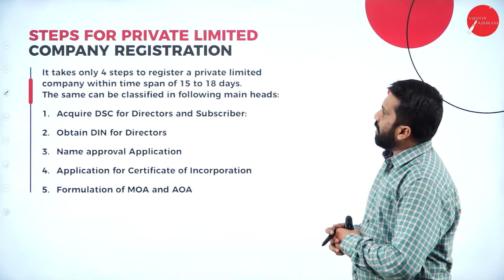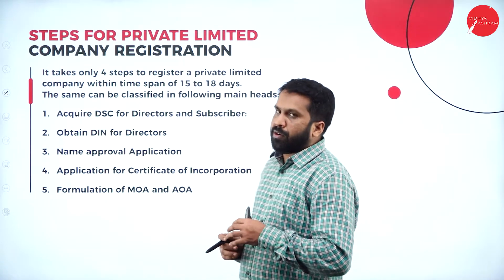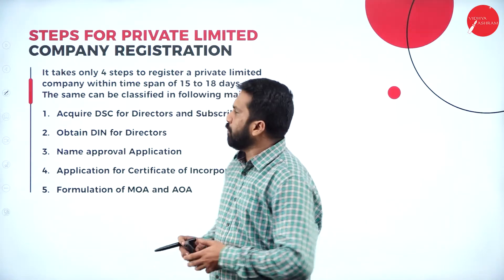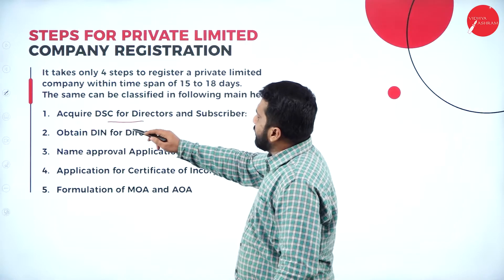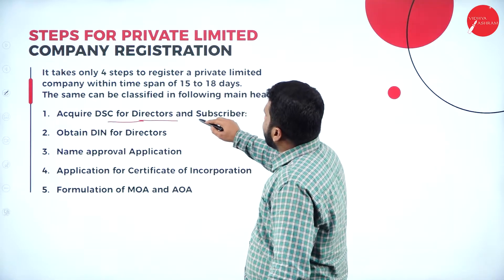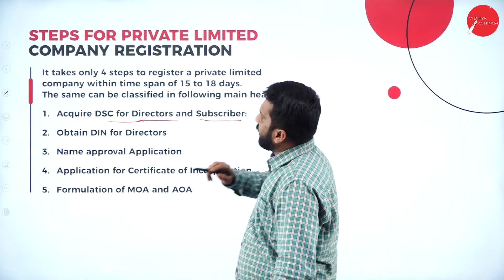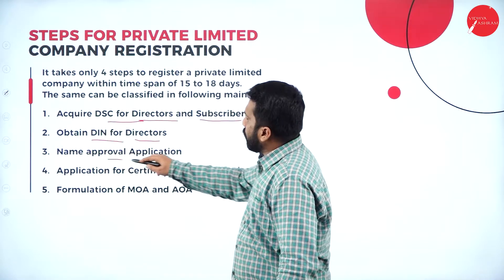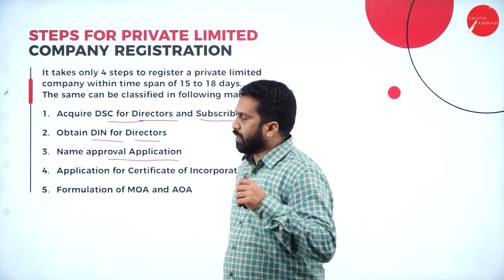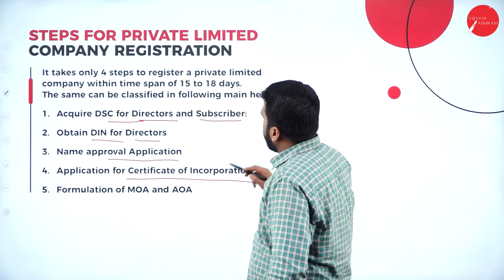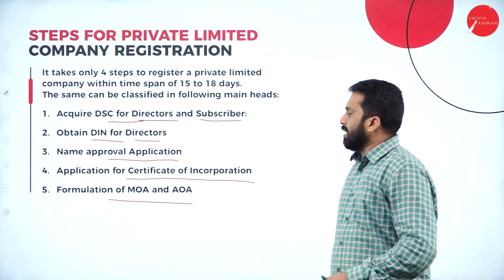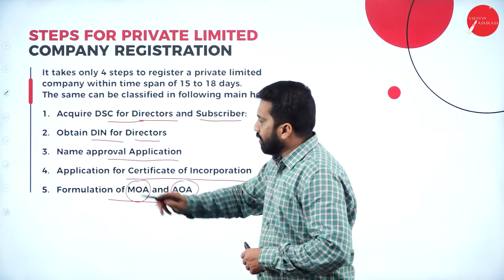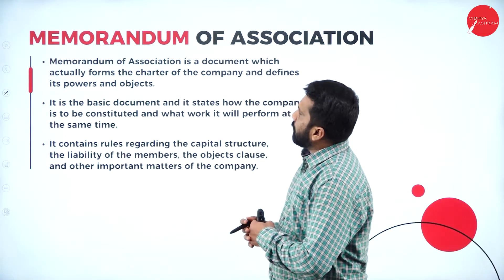The steps for private limited company registration are: first, acquire a DSC (Digital Signature Certificate) for directors and subscribers; second, obtain a DIN (Director Identification Number) for directors; third, name approval application; fourth, application for certificate of incorporation; and fifth, formation of memorandum of association as well as articles of association — these are must required to commence business.